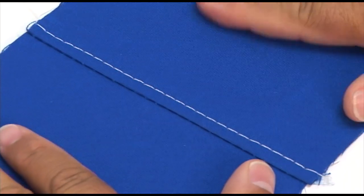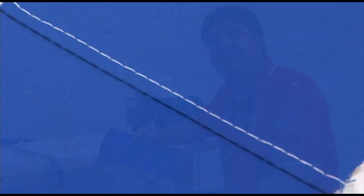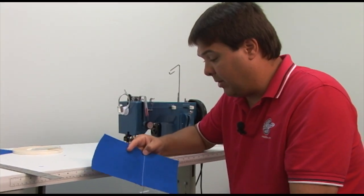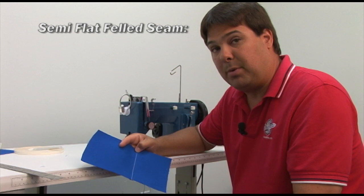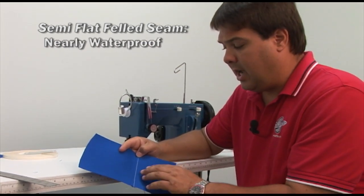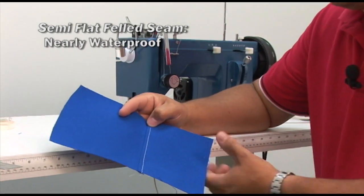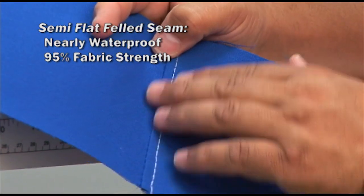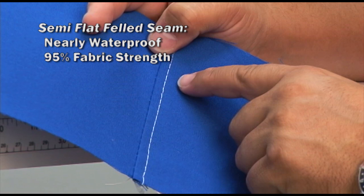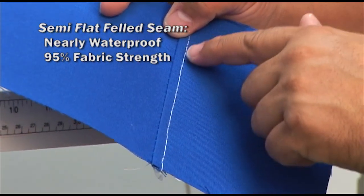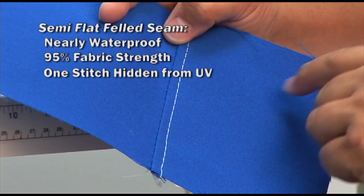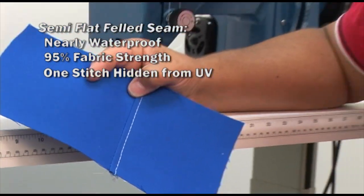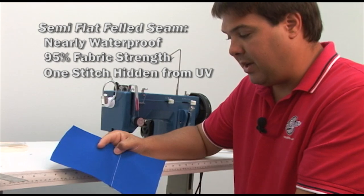But from one surface it's very attractive. So what are the properties of the semi-flat felled seam? Well, the seam is nearly waterproof, which is a good thing. It is also a very strong seam. You'll get about 95% of the strength of the fabric out of this type of a seam construction. We only have one exposed stitch line here to the sun, and if this stitch line fails, the hidden stitch will certainly hold the seam together. So that's very good.